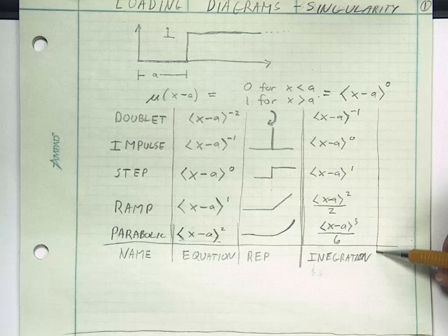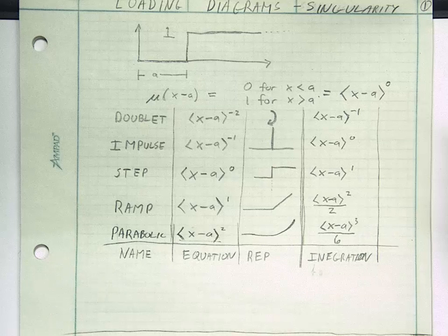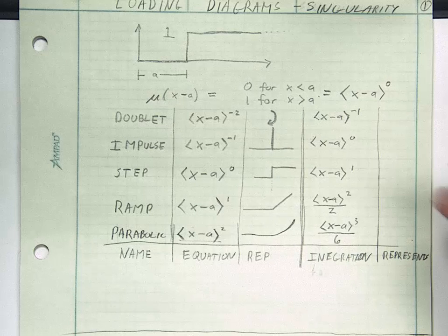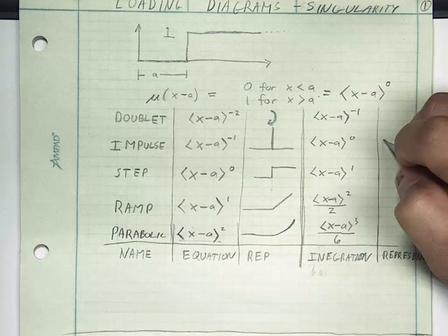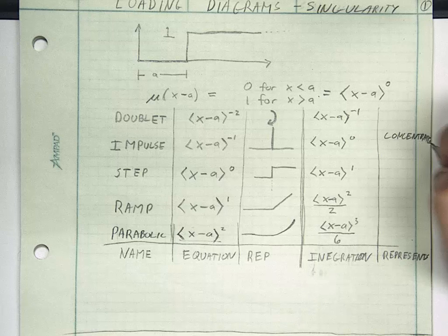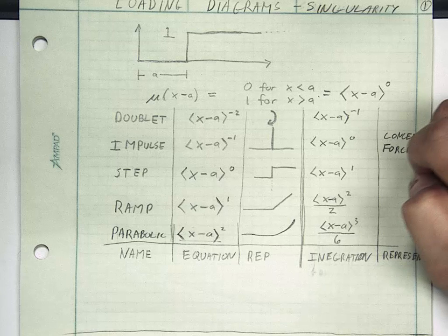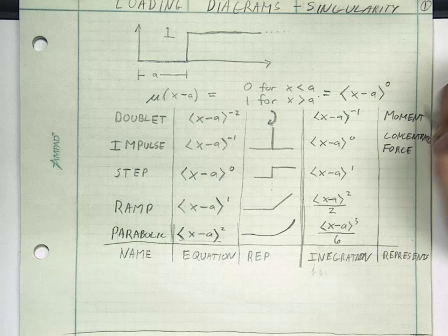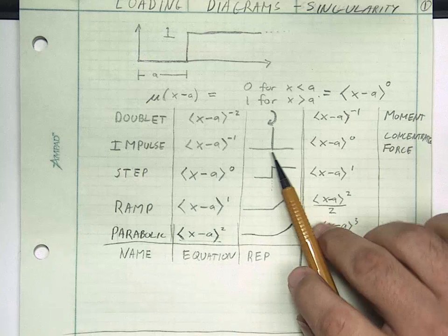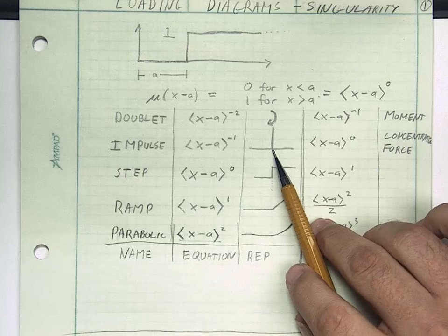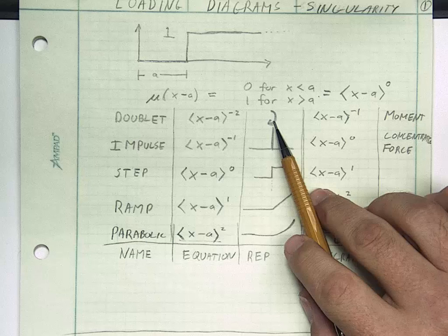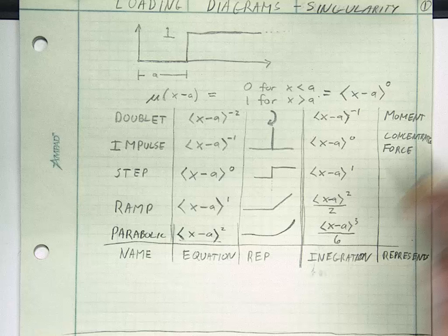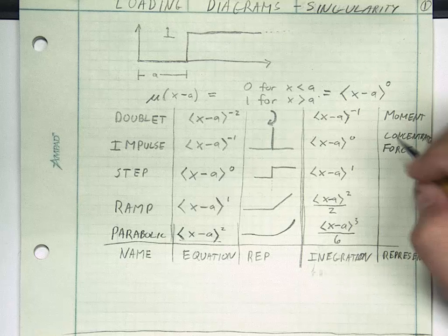Let's start with the impulse. This represents concentrated force. This one represents a moment. I don't know that I can convince you graphically. This definitely looks like a concentrated force, so that's not surprising. Why a concentrated moment is represented by a doublet, it's harder for me to understand graphically. Step function is a uniformly distributed load. The ramp would be a linear load, linearly distributed.